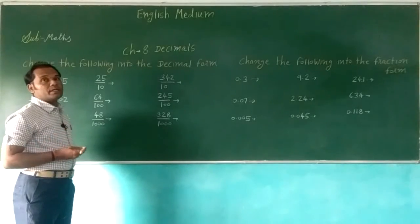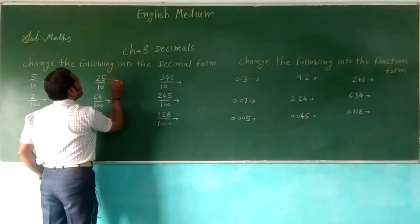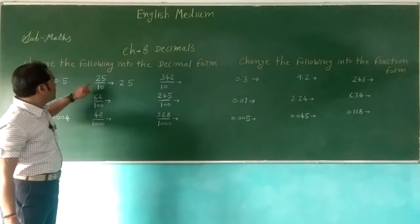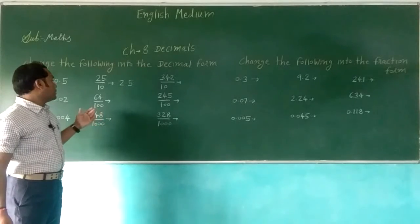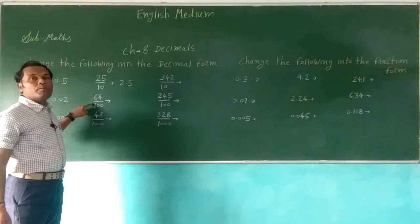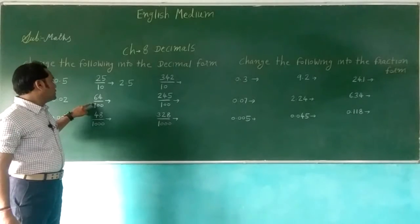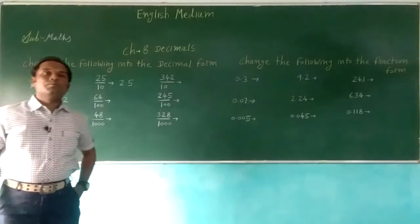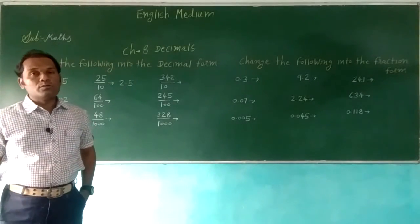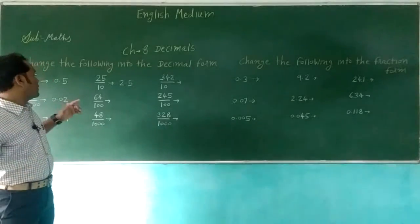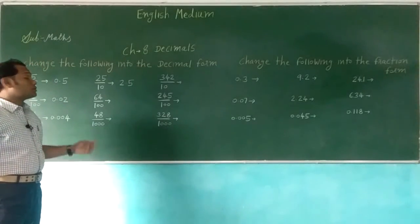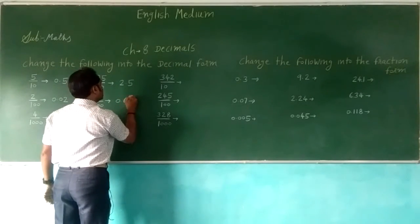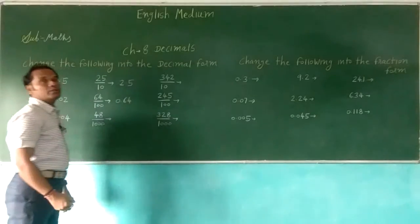25 by 10: decimal point moves 1 step, so 2.5. 64 by 100: right now decimal point is at 64.0, and 100 has 2 zeros so it moves 2 steps — 0.64. 48 by 1000: decimal point is at 48.0 and it moves 3 steps — 0.048.